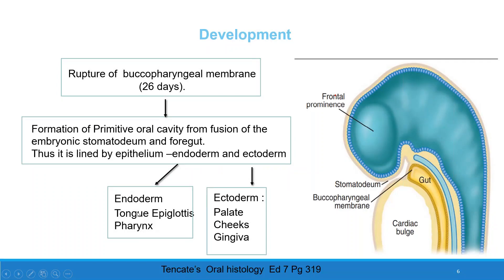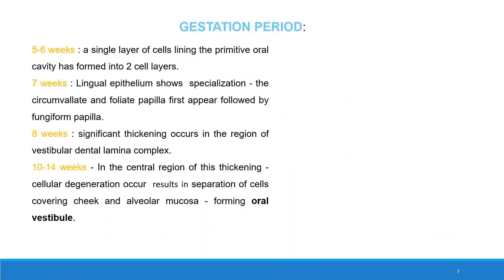Tongue, epiglottis, and pharynx are derived from endoderm, while palate, cheek, and gingiva are derived from ectoderm.